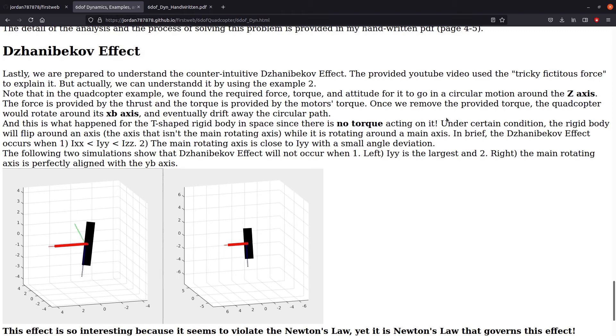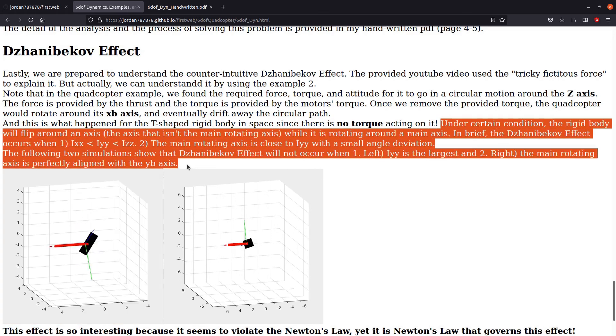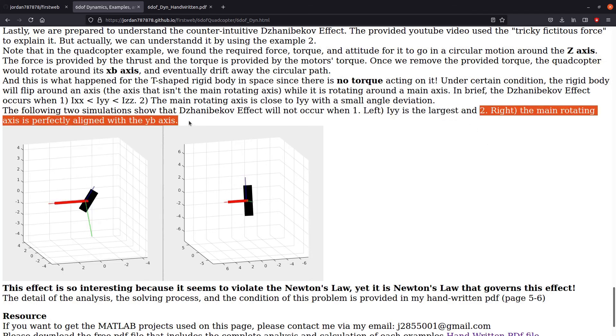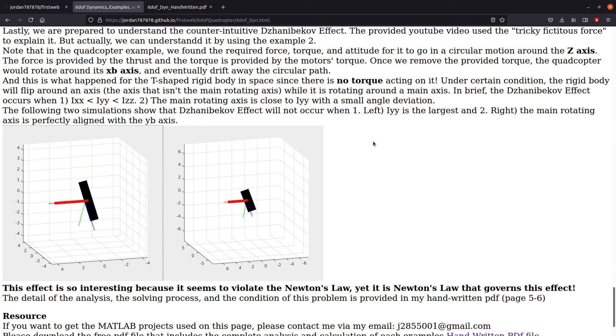However, there are some special conditions for this effect to occur. I won't go into the detail, but there is the condition for the rigid body's moment of inertia, and there is also another condition for its rotating axis and its principal axis. The following simulations show when the Dzhanibekov effect will not occur because of the configuration of the rigid body.